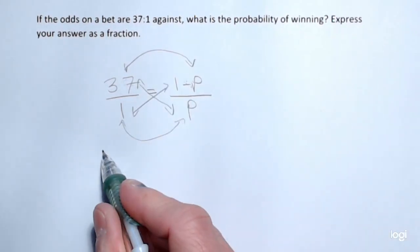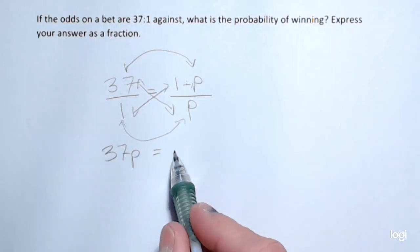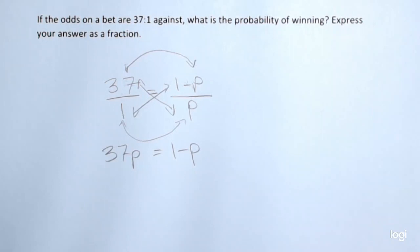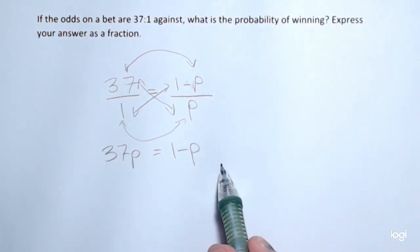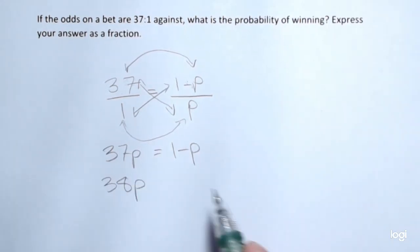So this is going to be 37p is equal to 1 minus p, because 1 times 1 minus p is just 1 minus p. All right, so moving things over to the other side, namely the p. I want to add p on the right side, so I'll get 38p on the left.